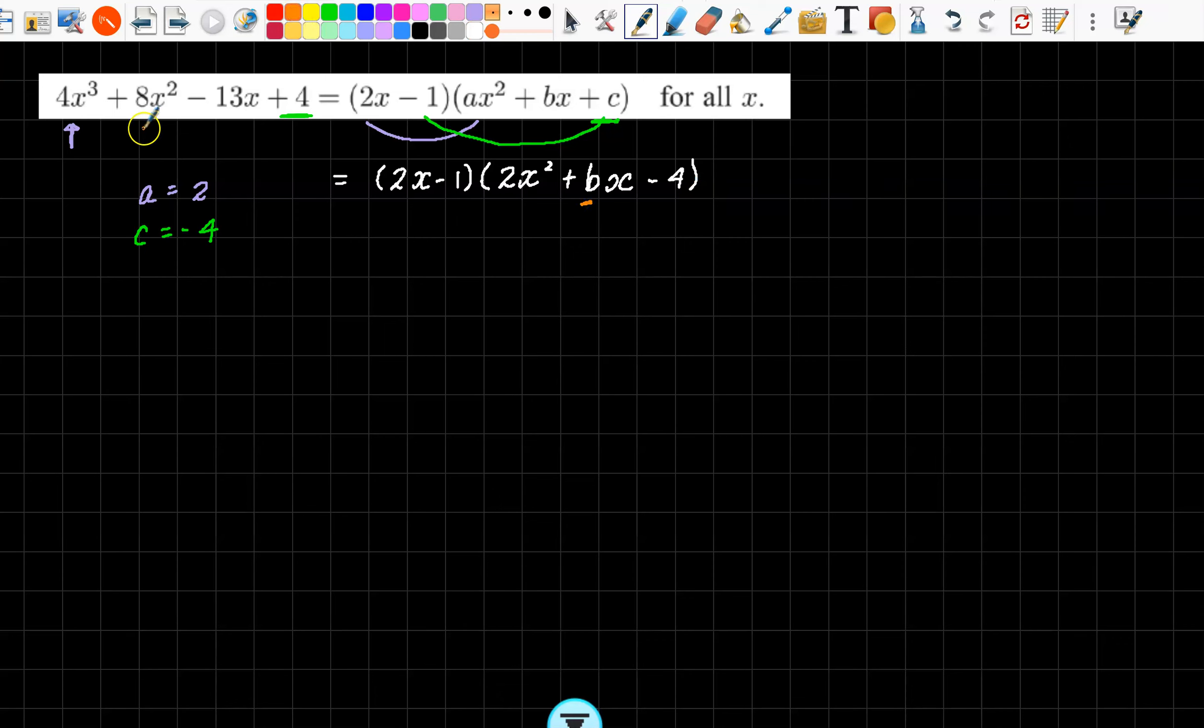Now it's time to find the b. We're going to take our x squared and say on the left-hand side, the coefficient is 8. Now on the right-hand side, how do I expand this and get an x squared? There's only a couple of ways. If I times 2x by 2, by bx, I get 2bx squared.